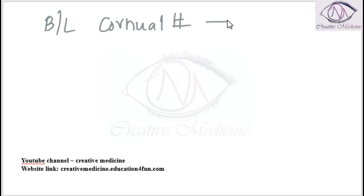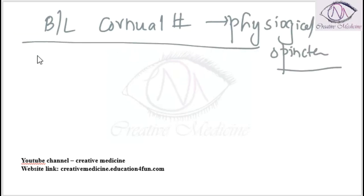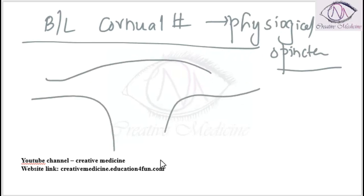The most common cause of bilateral cornual block is physiological sphincter spasm. If there is physiological sphincter spasm, then take a guide wire and under hysteroscopic guidance pass the guide wire into the tube. This is called hysteroscopic cannulation.